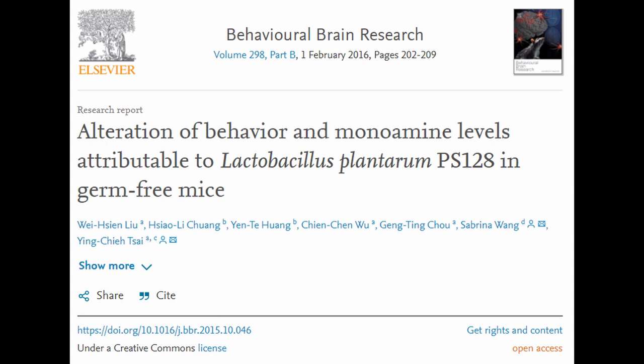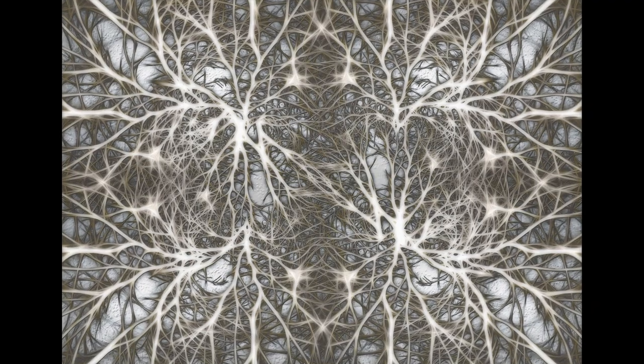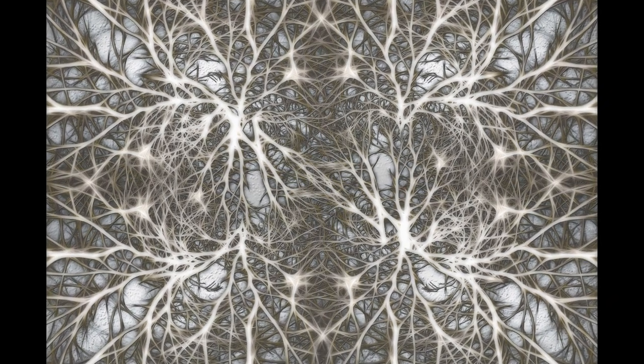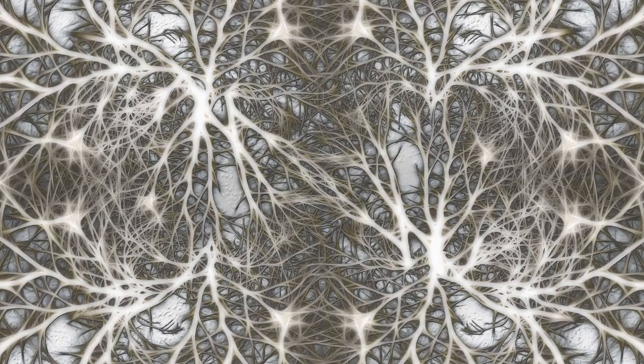While many probiotic bacterial strains produce neurotransmitters, dopamine can't cross the blood-brain barrier. Because the increase in dopamine was only seen in the striatum of the brain, it is possible that it was a result of vagus nerve stimulation by the bacteria, something seen with another strain, Lactobacillus rhamnosus.